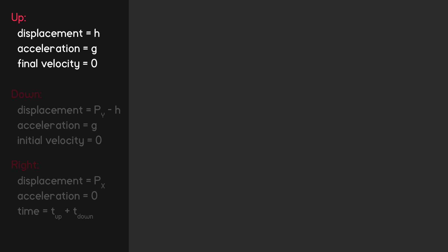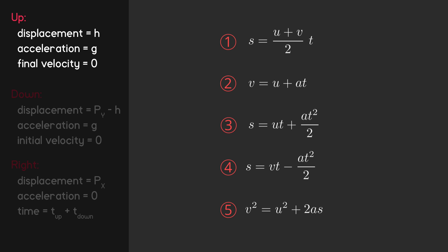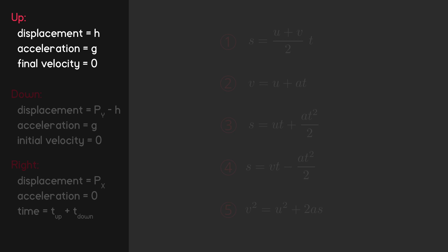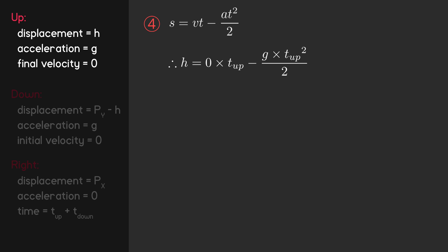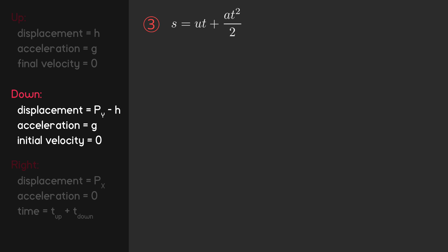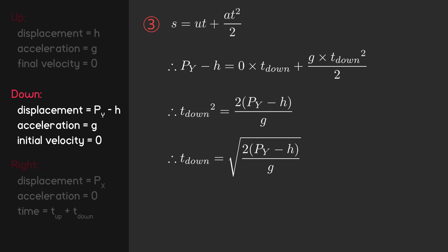Let's then figure out the time of the upwards motion. We need an equation that includes time as well as our known variables, so we'll be using equation 4. Substituting in: displacement becomes H, final velocity becomes 0, and acceleration becomes G. I'll then rearrange to solve for time squared and take the square root. We also need the time of the downwards motion — this time using equation 3, since we know the initial velocity not the final velocity. Displacement becomes P-Y minus H, initial velocity becomes 0, and acceleration becomes G. Then rearrange to solve for time squared and take the square root.